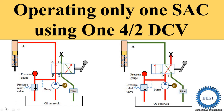In this video, I explain a hydraulic circuit or hydraulic system. In this hydraulic system, one single acting cylinder — SAC means single acting cylinder — is used, and this single acting cylinder is operated by using one 4/2 DCV. DCV means directional control valve. I explain this video by using animation so you can understand it easily.